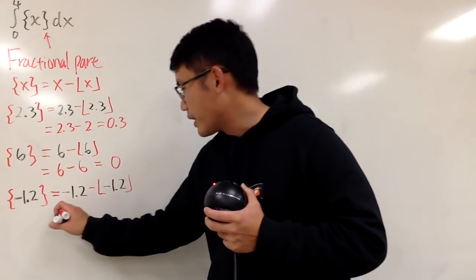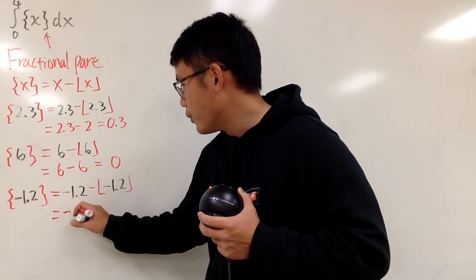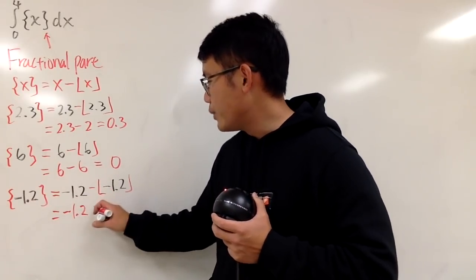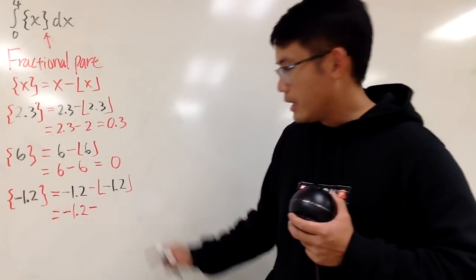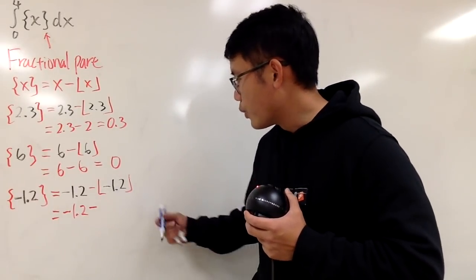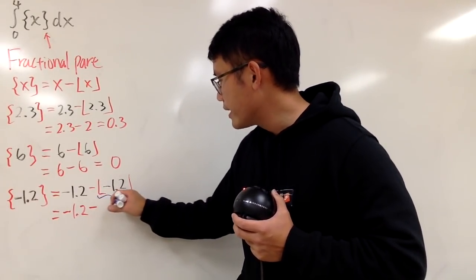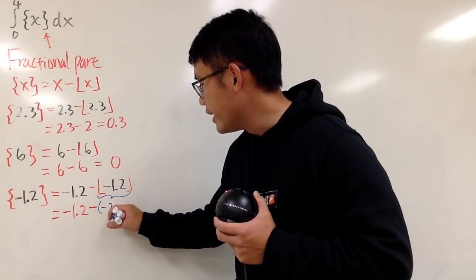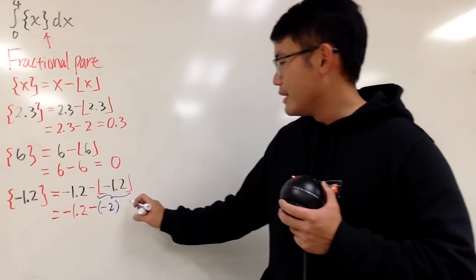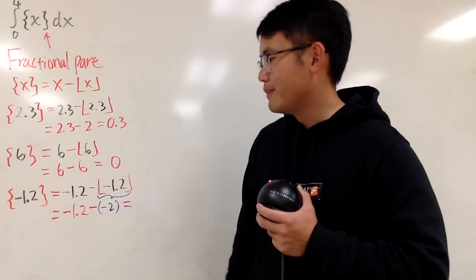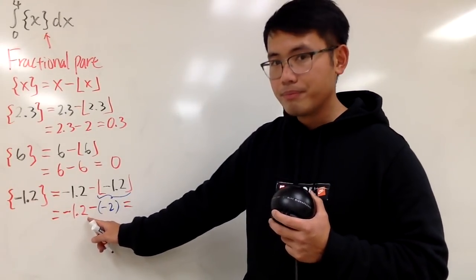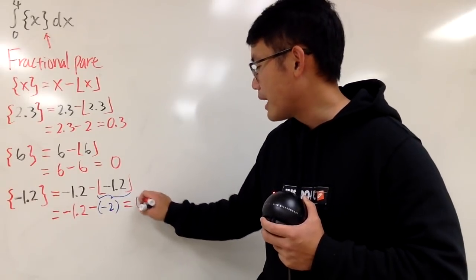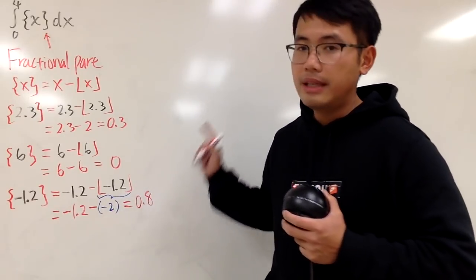Well, this right here is negative 1.2, and then we have to subtract this part right here. When we have the floor of negative 1.2, just like in the previous video, I showed you guys that. You actually get negative 2, like that. So, in the end, you have negative 1.2 plus 2, and you get positive 0.8.